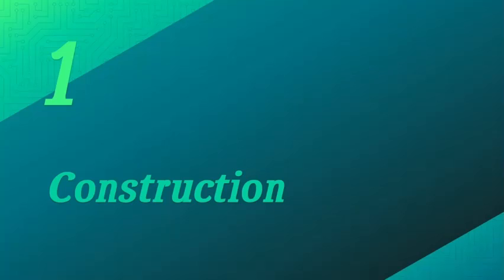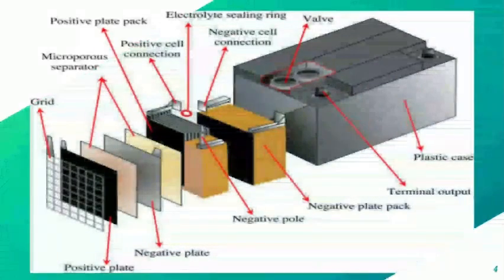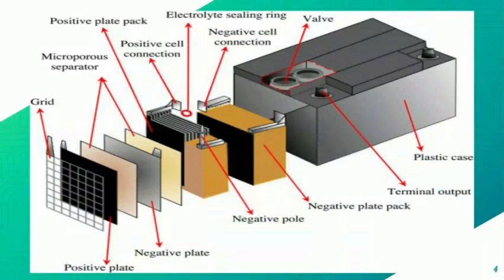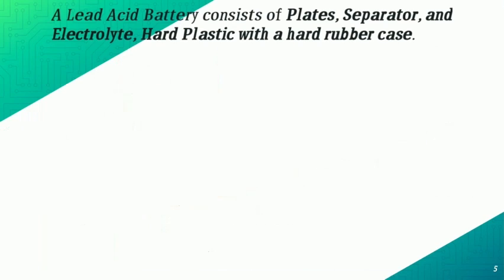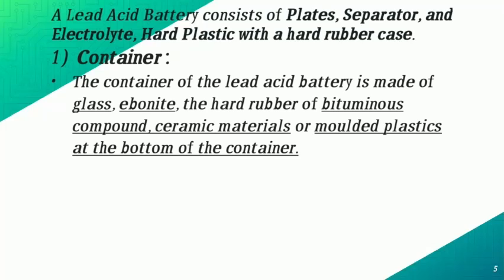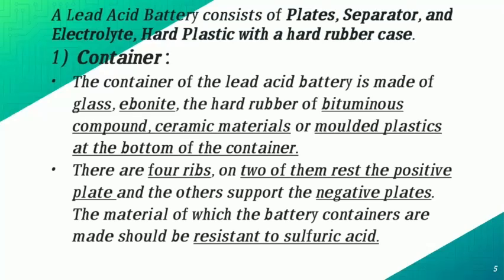Before going to the working principle, we will look at the construction part. This is a diagram of the construction showing what is inside the lead-acid battery — components like the grid, negative plate, positive plate, and the plastic case. The lead-acid battery consists of separators, plates, electrolytes, and a plastic or hard rubber case container.